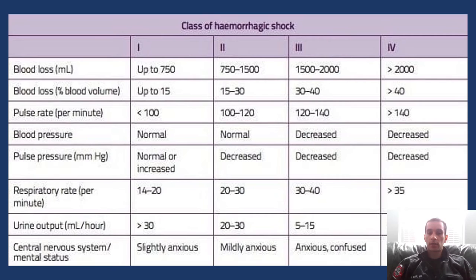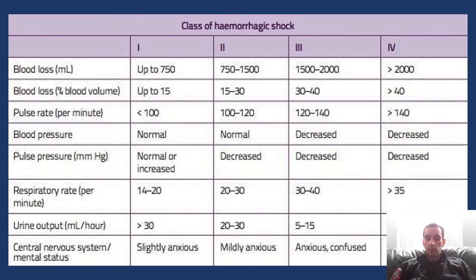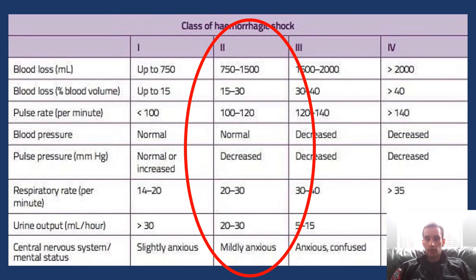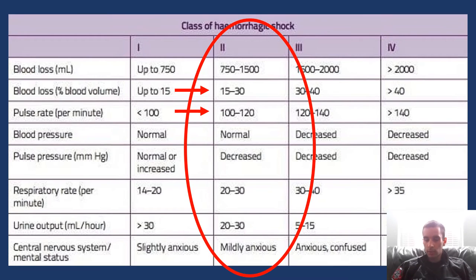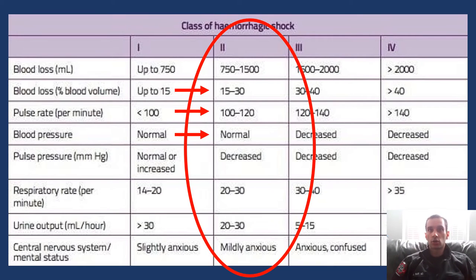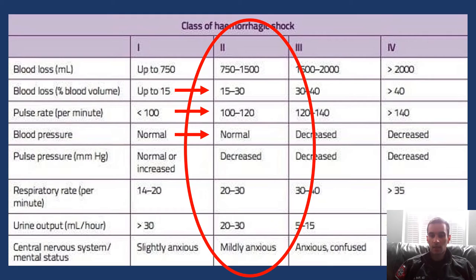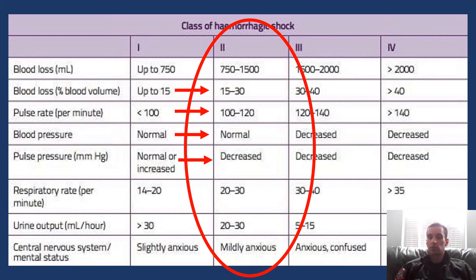This chart specifically covers hemorrhagic shock. What I want you to take from it is class two: you can have 15 to 30% loss of blood volume — almost a third of your blood — and your heart rate starts to quicken, but the blood pressure stays normal. I can't emphasize this enough: in the early stages of shock, you won't see any effect on blood pressure. All you might see is a slightly quick heart rate. Pulse pressure, the difference between systolic and diastolic, is decreased or narrowed in hemorrhage and can be another early clue.